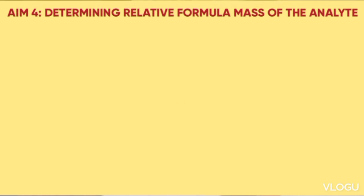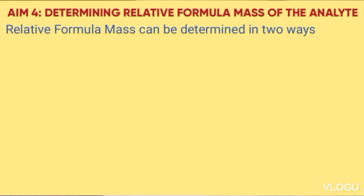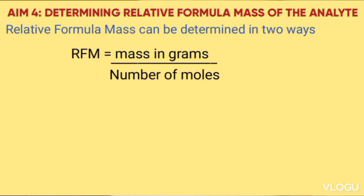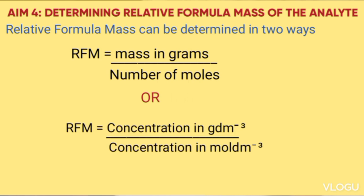Our lesson today deals with aim number four: determining relative formula mass of the analyte. There are two ways of finding the relative formula mass. One: RFM equals mass in grams divided by number of moles. Or RFM equals concentration in grams per dm³ divided by concentration in moles per dm³.